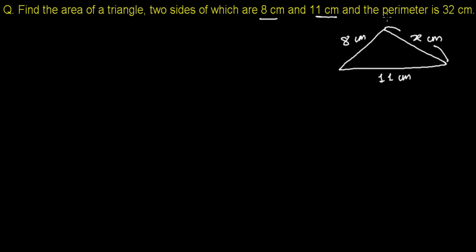According to the question, the perimeter is 32 cm. So perimeter is 32 cm, and perimeter is simply the sum of all three sides—the sum of this side, this side, and this side. So the sum of all three sides is going to be 8 plus 11 plus x equals 32.